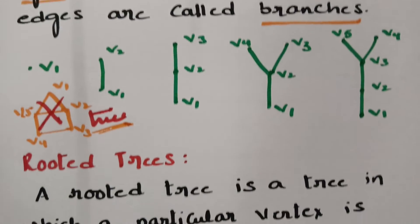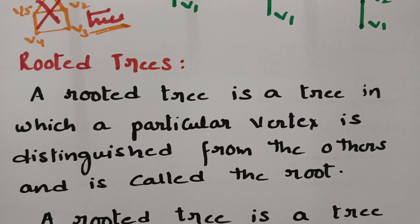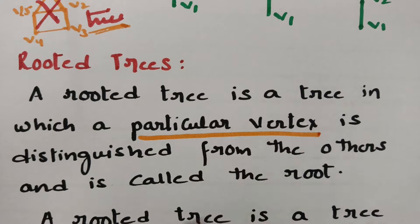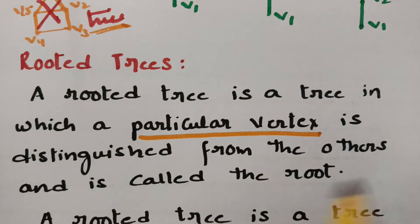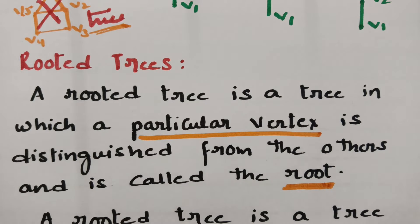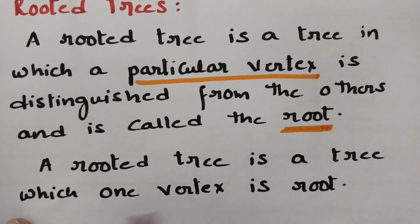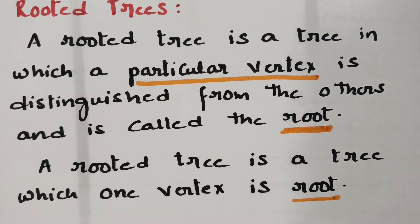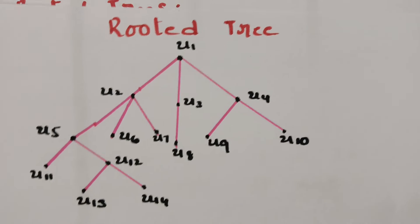Now let me explain rooted trees. A rooted tree is a tree in which a particular vertex is distinguished from the others and is called the root. Out of all vertices we select one vertex and name it as the root. Note that in nature trees have roots at the bottom, whereas in graph theory the root is placed at the top of the graph.